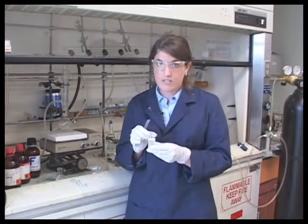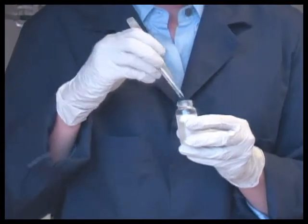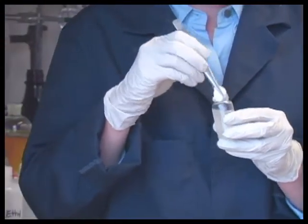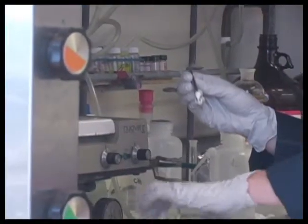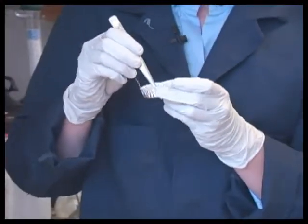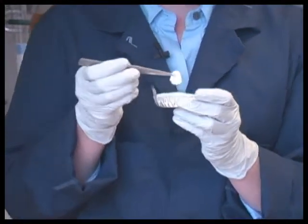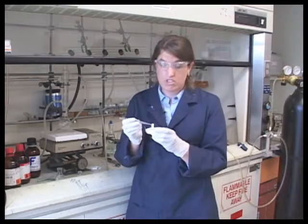Once we've added all of our peroxide and allowed the vial to cool a little bit, we can take out our glob of polymer. This polymer has neat characteristics because it stays flexible at low temperatures.